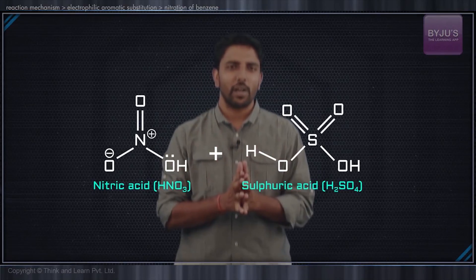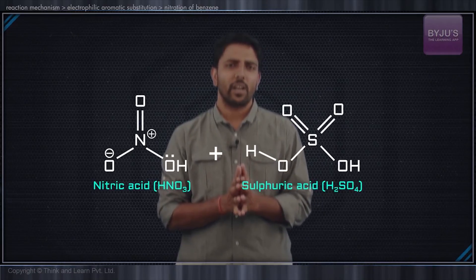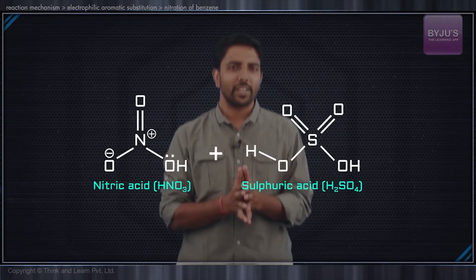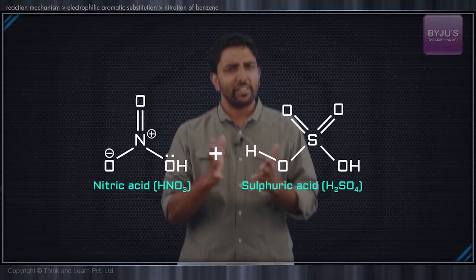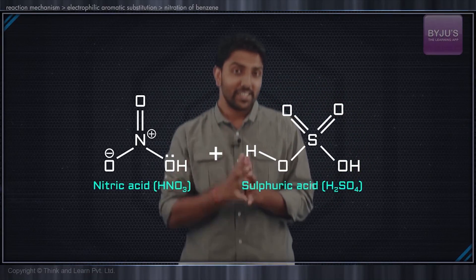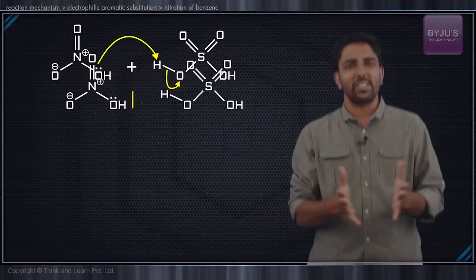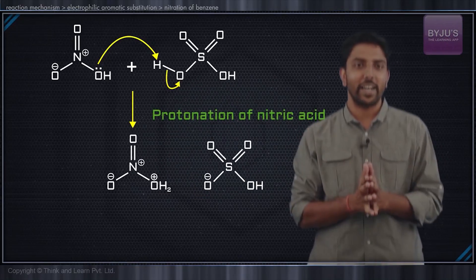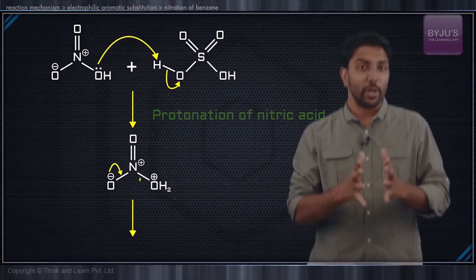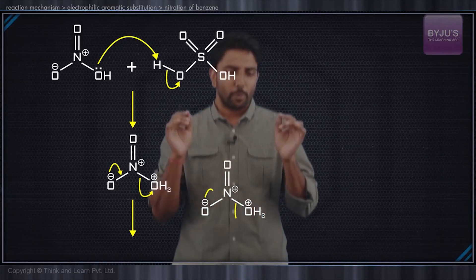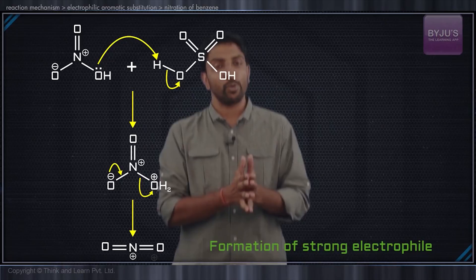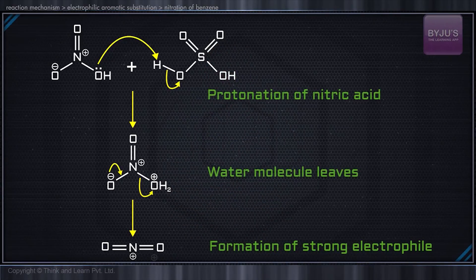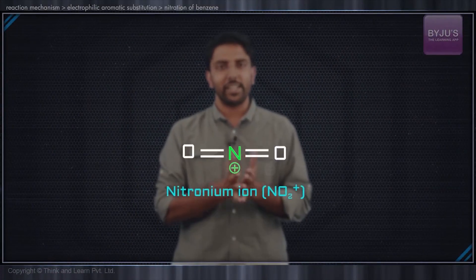What happens when we mix these two powerful concentrated acids? It's a fantastic scenario. We have these two acids here. Which is the stronger acid? Definitely, it's the sulfuric acid. Hence, it protonates the nitric acid. How cool is that — a strong concentrated acid getting protonated! The protonated nitric acid then loses a water molecule, and we have a strong electrophile: the nitronium ion, NO₂⁺.